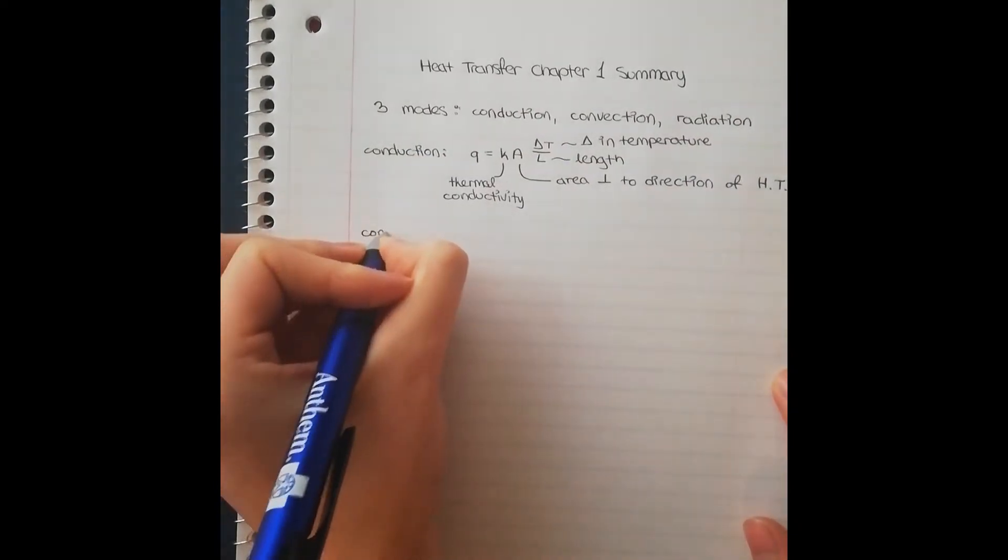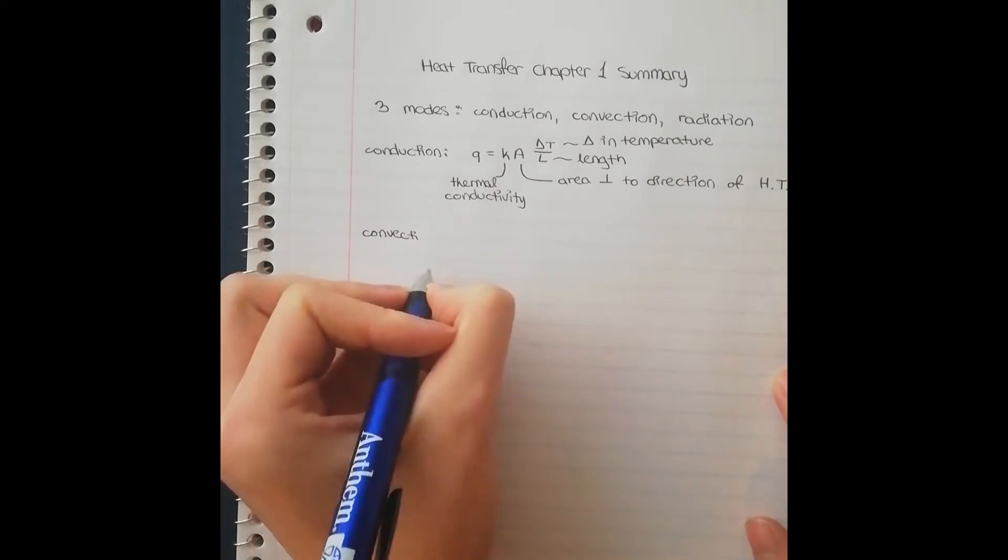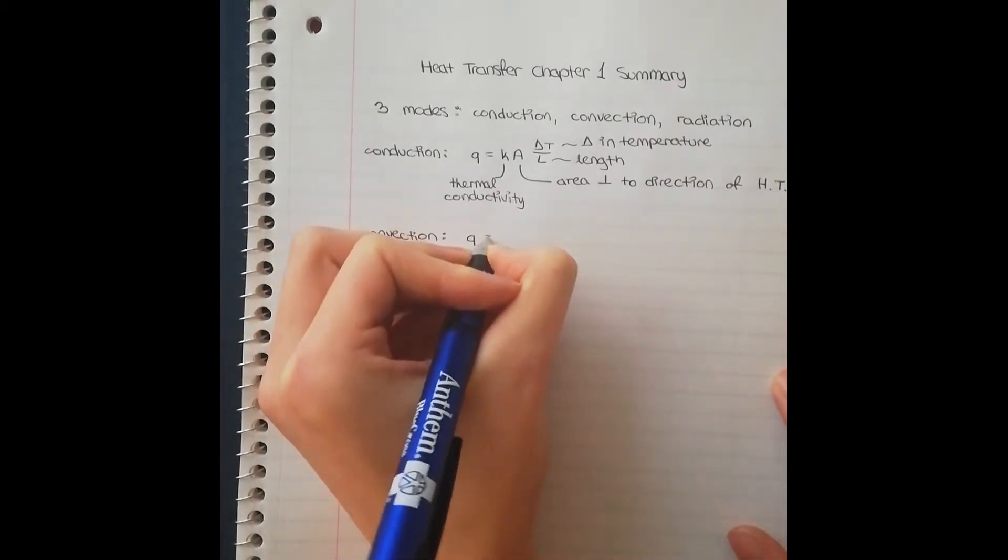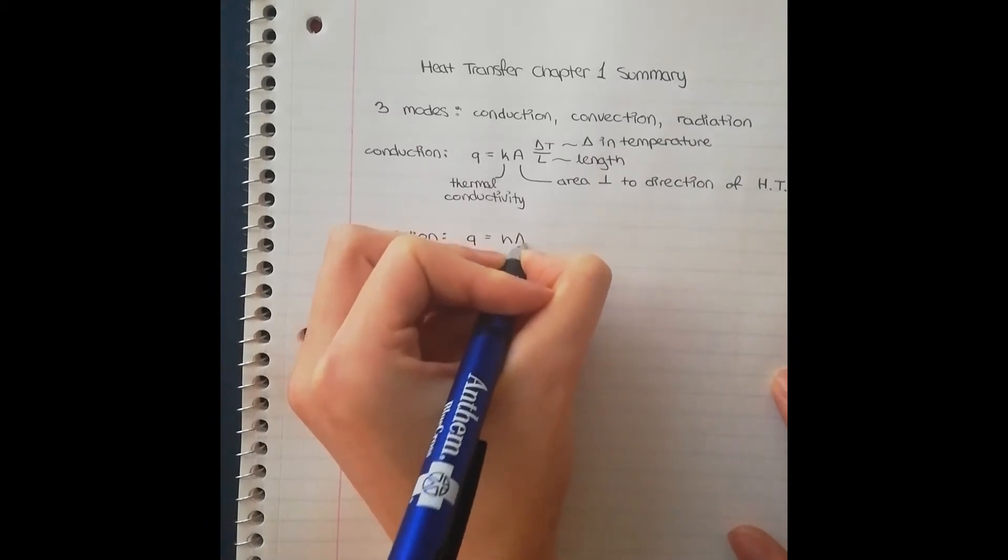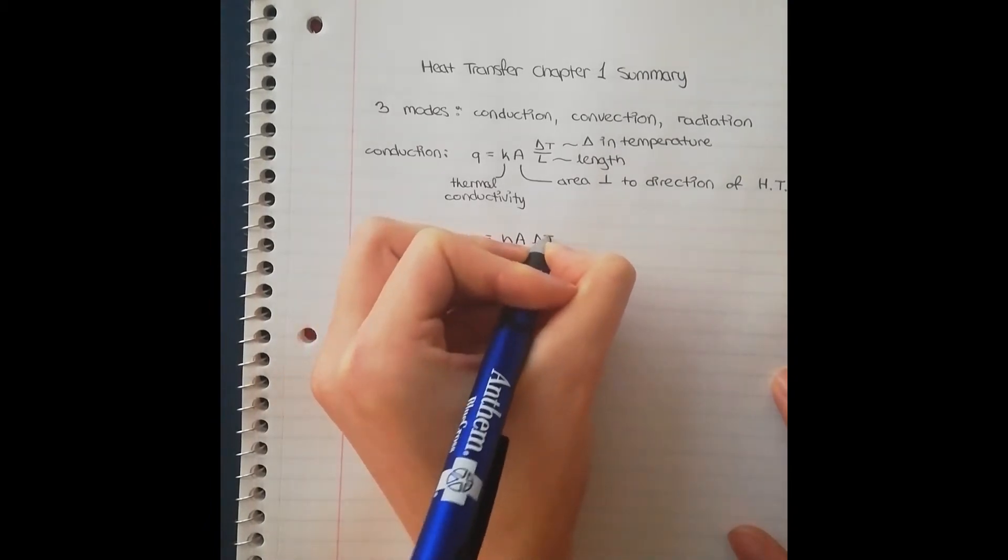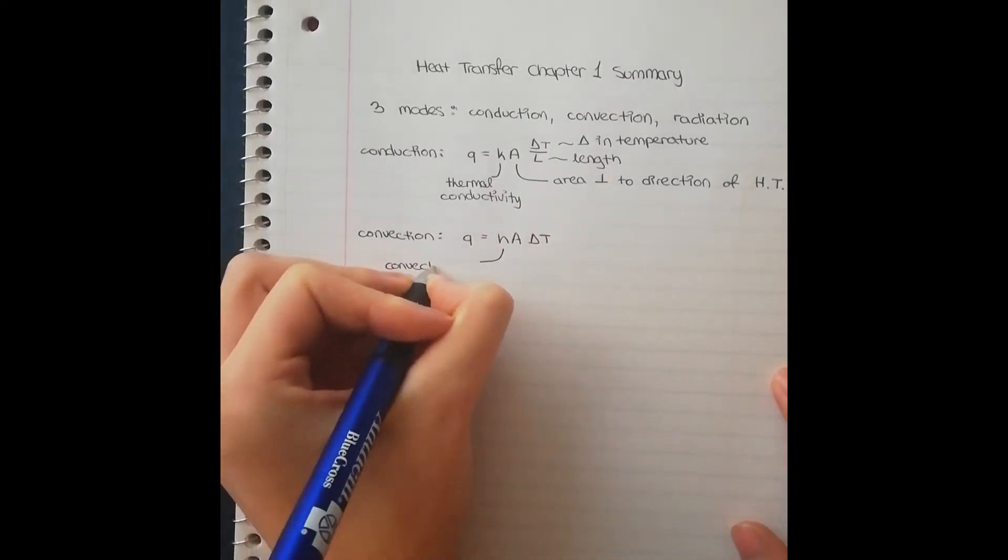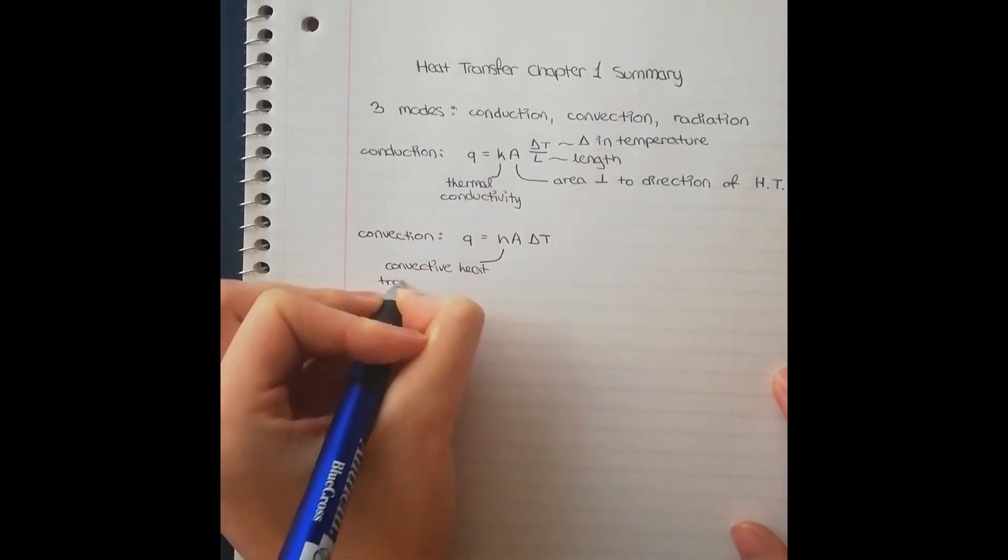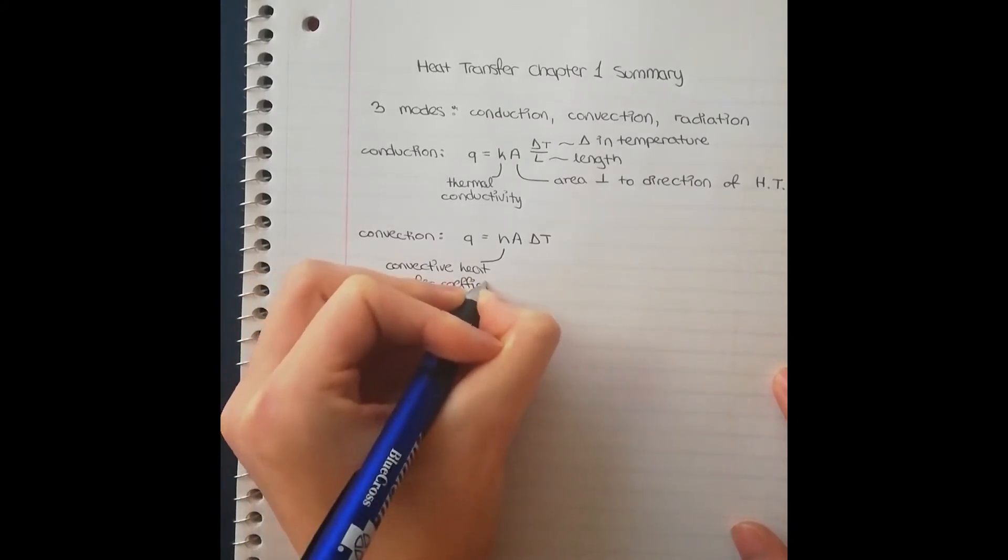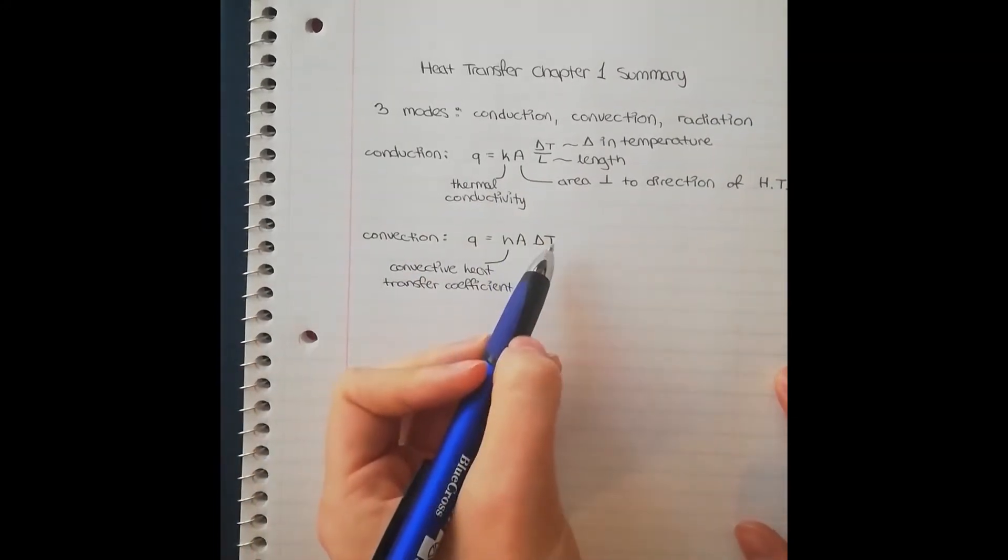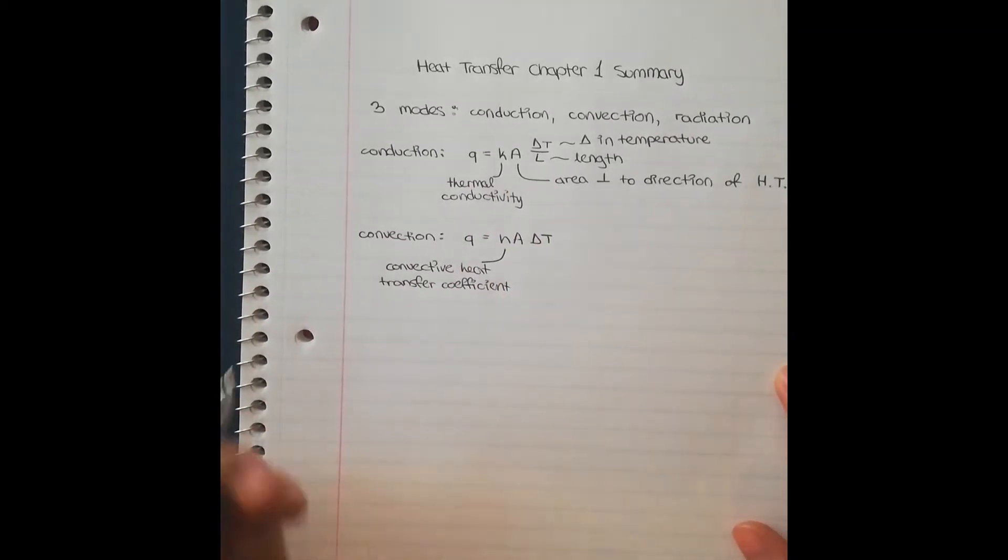Next, we go on to convection. The guiding equation for convection is Q is equal to H A delta T, where H is also a constant, and it is called the convection heat transfer coefficient. A is exactly the same area as above, and T is also the change in temperature, same as above.